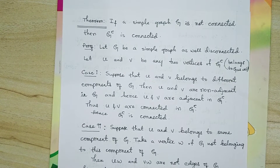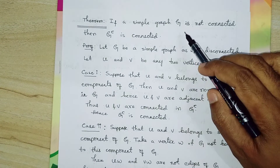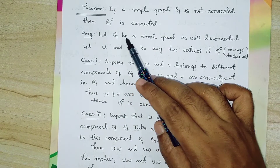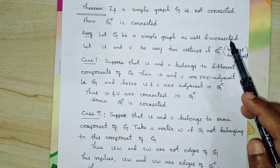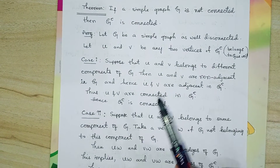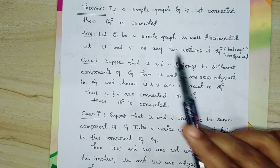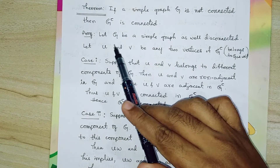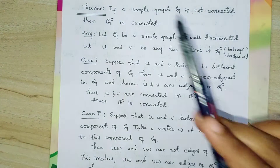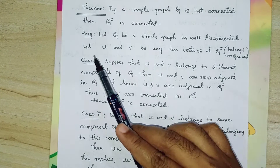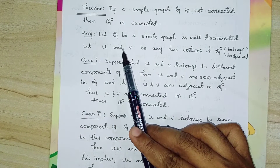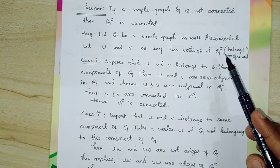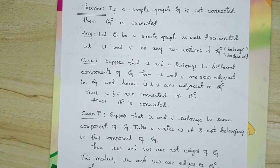Let me show that if G is a simple graph which is not connected, then G complement is connected. Let G be a simple, not connected graph. To show that G complement is connected, it is enough to show that between any two vertices of G complement there exists a path. Since G complement has the same vertices as G, let me consider two vertices U and V of G complement.